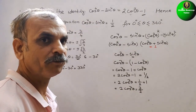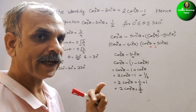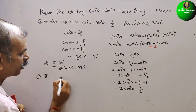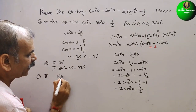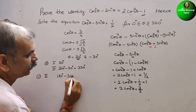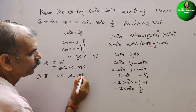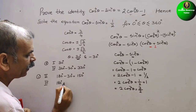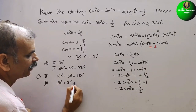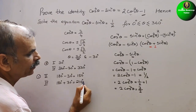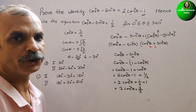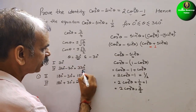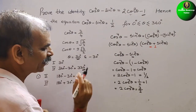For the negative case, solutions come in the 2nd and 3rd quadrants. In the 2nd quadrant, we use 180 degrees minus theta, which gives 150 degrees. In the 3rd quadrant, we use 180 degrees plus theta, which is 180 plus 30, giving 210 degrees. Therefore we get 4 solutions: 30 degrees, 330 degrees, 150 degrees, and 210 degrees.